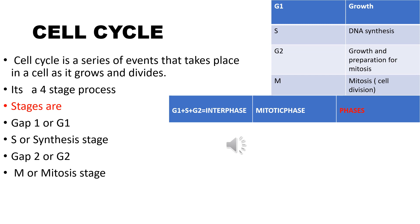In G1, cell growth takes place. In S, DNA synthesis occurs. In G2, there is growth and preparation for mitosis. In M, mitosis — that is, cell division — takes place. So G1 is for growth, S is for DNA synthesis, G2 is for growth and preparation for mitosis, and M is for cell division.